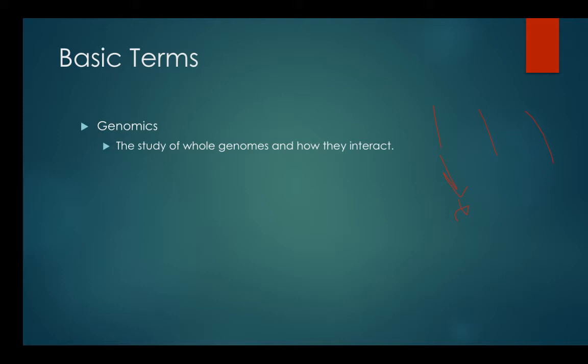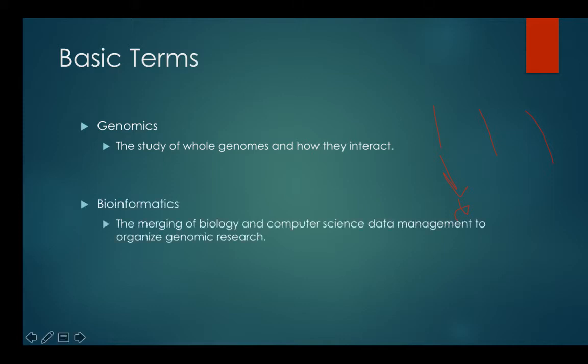The problem is you get all this information — you find out all the genes, all the proteins — it's a lot of work. So what scientists are beginning to do is something called bioinformatics. This is basically using computer science and data management to organize genome research. They're using computers, databases, and fancy search engines to put all this information online so they can store it and easily access it. Basically, they're forming a Google for the human genome and other organisms' genomes.